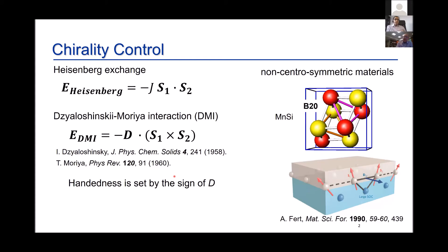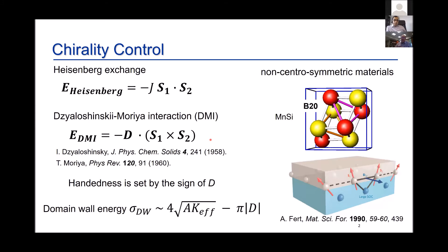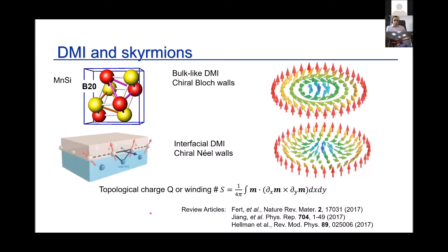The DMI tends to want spins at 90 degrees, while Heisenberg exchange wants them parallel. The combination gives some winding of the structure, similar to a domain wall. Crucially, the handedness is set by D, so left- and right-handed domain walls are no longer energetically equivalent — one handedness is preferred. DMI lowers domain wall energy, making domain structures much smaller. If DMI is large enough, the domain wall energy becomes negative and the system collapses into a helix state with continuous 360-degree winding.